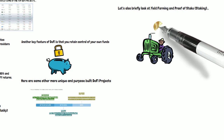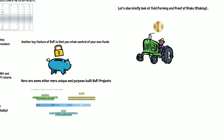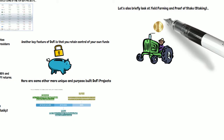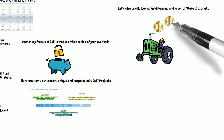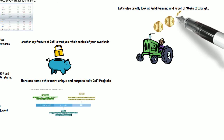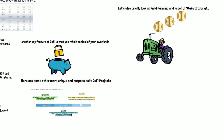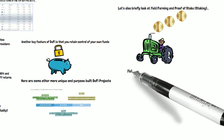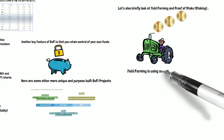We're also going to take a look at yield farming and proof of stake, or staking. Yield farming is where you're trying to get the highest possible yield across multiple DeFi platforms, through different liquidity providing and staking options. Here we have a farmer farming some Bitcoin — more likely wrapped Bitcoin on the Ethereum network — trying to get the highest rates possible available.